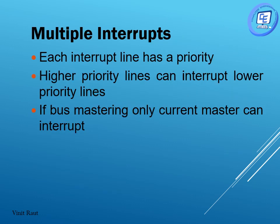With multiple interrupts, which interrupt should be executed first by the CPU? A priority concept can be implemented. For the first method — independent lines or multiple lines — higher priority lines can interrupt lower priority lines and get their interrupt service routine executed. If bus mastering is used, only one master can raise an interrupt, so there is no priority concept; the master controlling the bus sends the interrupt, which is then executed by the CPU.